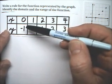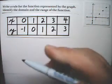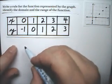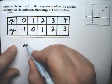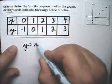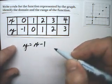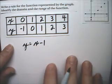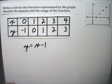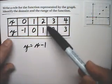So, the y is always 1 less than x. 1 less is minus 1. So, y equals x minus 1. That's the rule for this function, and you get it just by looking at the table.